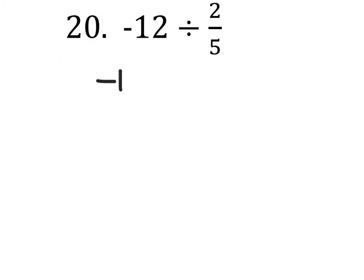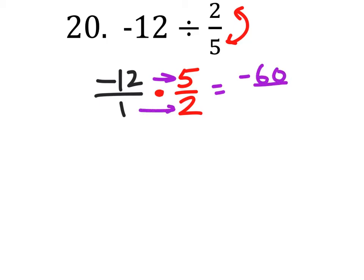On number 20, we've got this negative 12, you can make it over 1 if you want, but the problem is we don't divide fractions, we multiply them. If we do that, we've got to reciprocate these so that we have 5 halves. Negative 12 times 5 is negative 60 over 1 times 2 is 2.